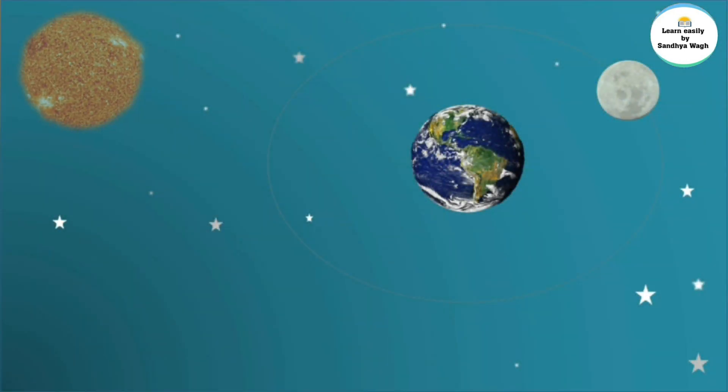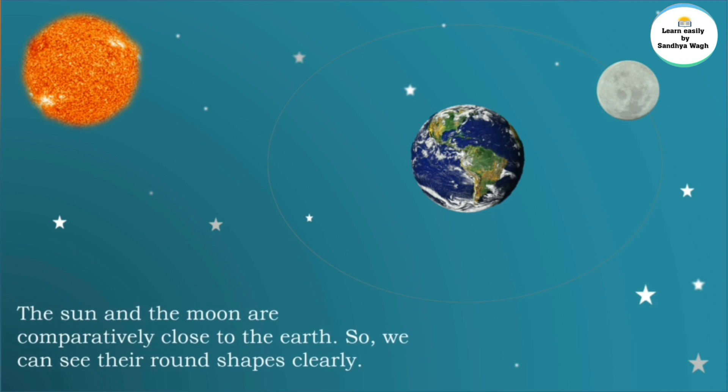The sun and moon are comparatively close to the earth. So we can see their round shapes clearly. Stars are very far from earth, so they appear small and twinkle. Some stars twinkle while some appear faint.